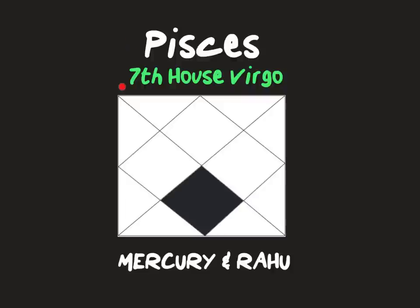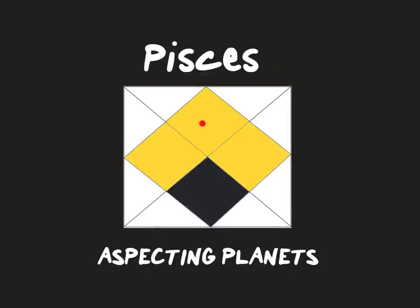Finally, Pisces rising: the 7th house of Virgo is your Baddaka house. Note any planets in Virgo — they will have a Baddaka effect in your life. Check Mercury and Rahu because they are rulers of your Baddaka sign. Where is Mercury? Where is Rahu? Any conjunctions to either Mercury or Rahu will bring Baddaka effect. Check aspecting planets from the 1st house Pisces, 4th house Gemini, and 10th house Sagittarius — these all have a Rasi aspect onto your Baddaka house and will also have a Baddaka effect.